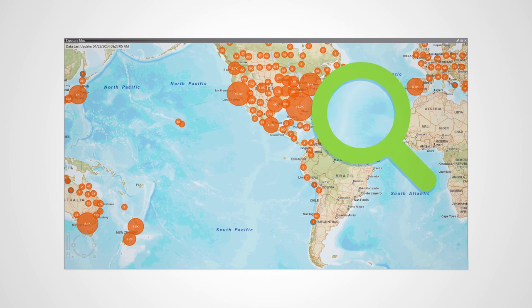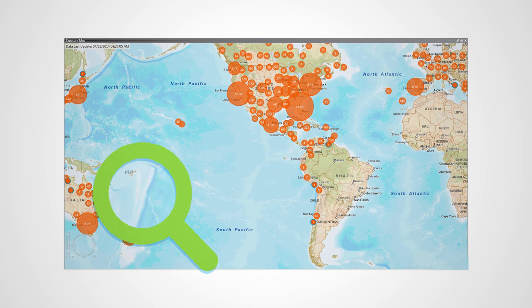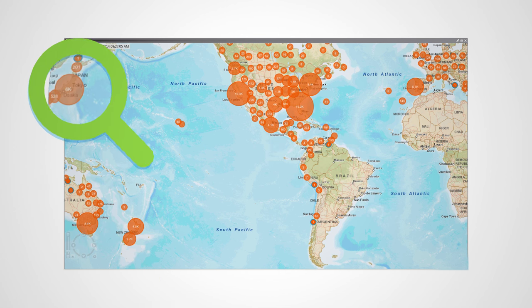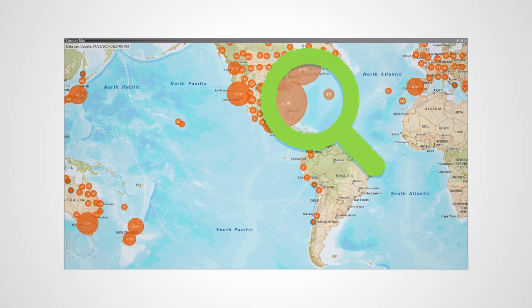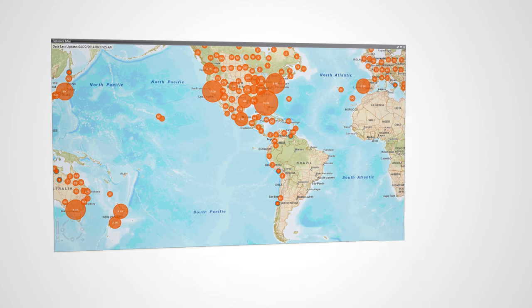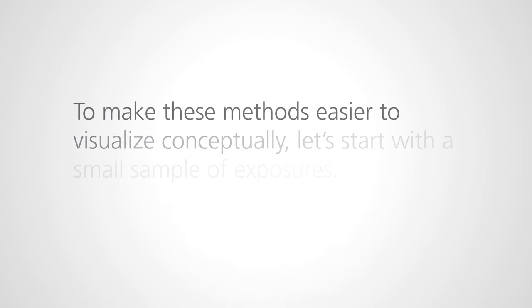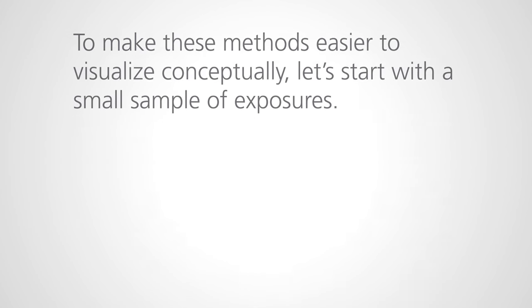This information helps manage risk accumulations and is often required by regulators and rating agencies. Your company may have an existing method to find that important but elusive ring. To visualize these methods conceptually, let's start with a small sample of exposures.